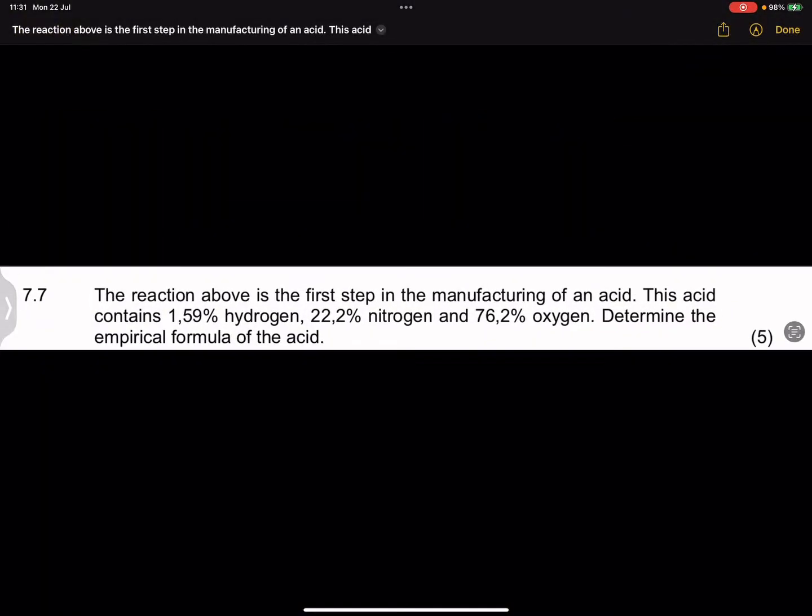Now let's go right into it. I took this question as part of a previous exam question paper. They say the reaction above is the first step in the manufacturing of an acid. This acid contains 1.59% hydrogen, 22.2% nitrogen, and 76.2% oxygen. Determine the empirical formula of this acid.